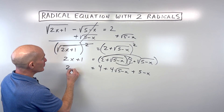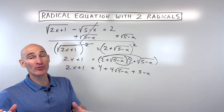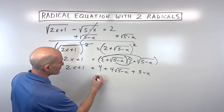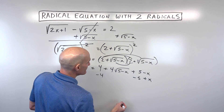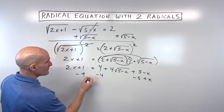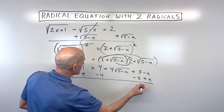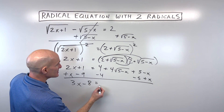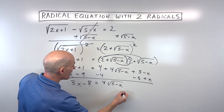Now we're going to isolate this square root by itself on one side and square both sides a second time. We subtract 4 and subtract 5 and add x — that's like subtracting 9 and adding x to the other side. So we get 3x minus 8 is equal to 4 times the square root of 5 minus x.